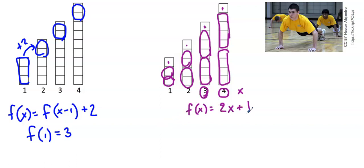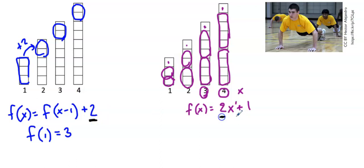So my explicit equation is f(x) = 2x + 1. This is a linear equation because the exponent on x is just 1. When I compare my recursive equation and my explicit equation, I feel confident because in the recursive equation you're adding two each time, and in the explicit equation that's the slope — the amount being repeatedly added.